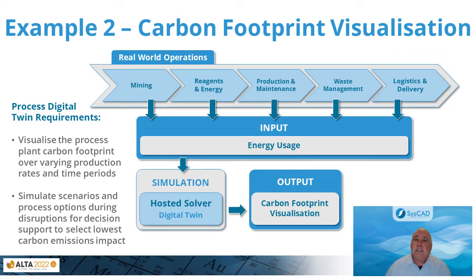Example two of a digital twin provides carbon footprint visualization. Integrating renewable power systems with a process digital twin provides operations with a holistic visualization of the plant energy consumption and carbon footprint. This knowledge allows for a better understanding and identification of opportunities to maximize decarbonization efforts. In this digital twin solution, energy usage input data is taken from various real-world operation sources. Operations teams can run scenarios for optimal heat recovery, pinch point analysis, and other energy saving and decarbonization opportunities.